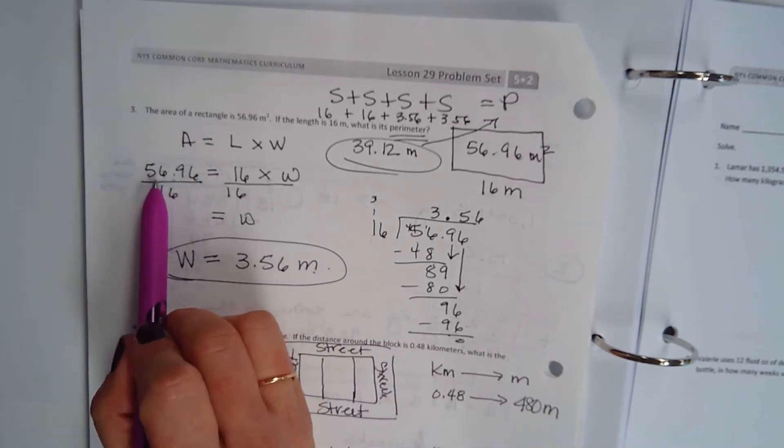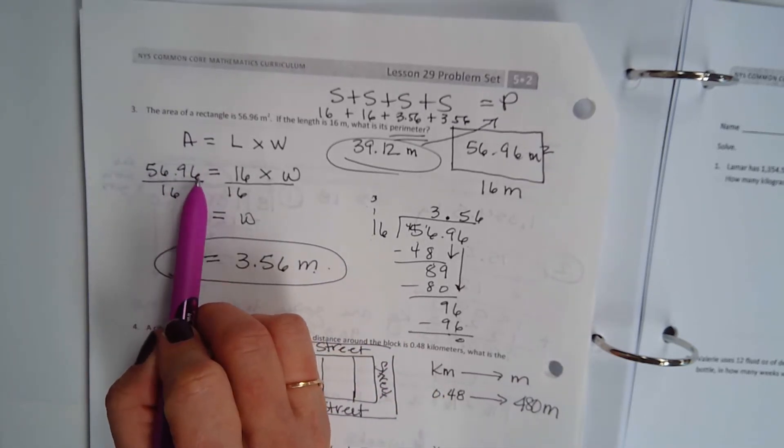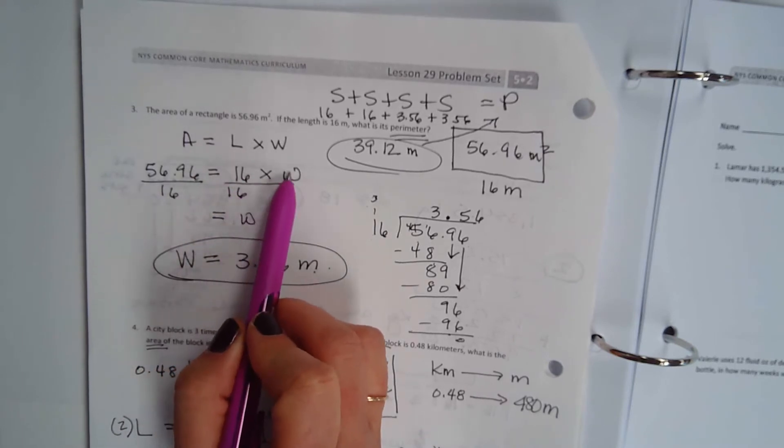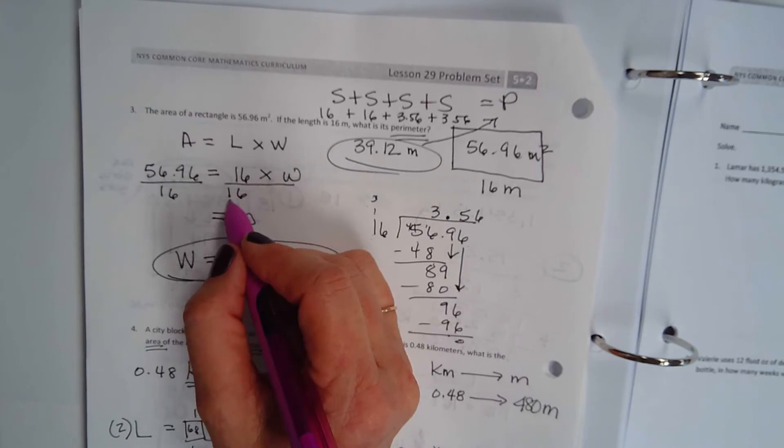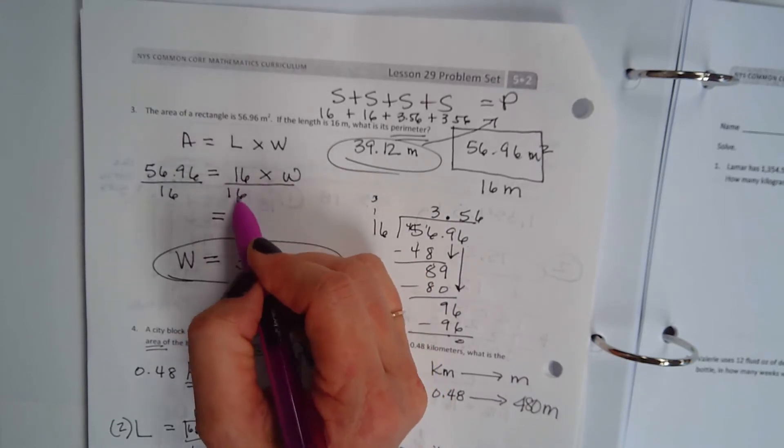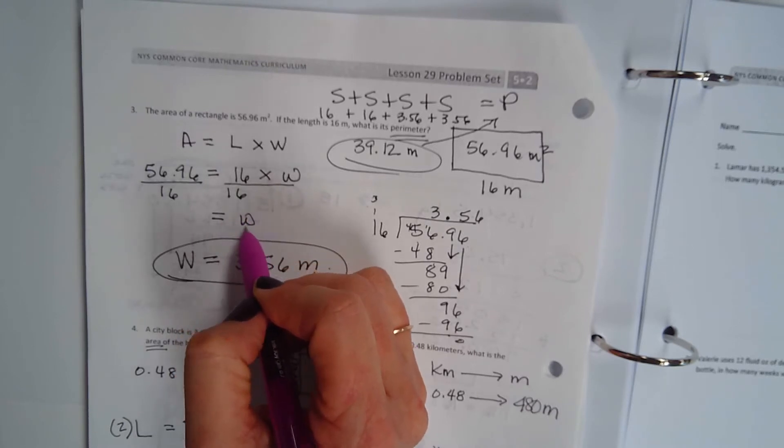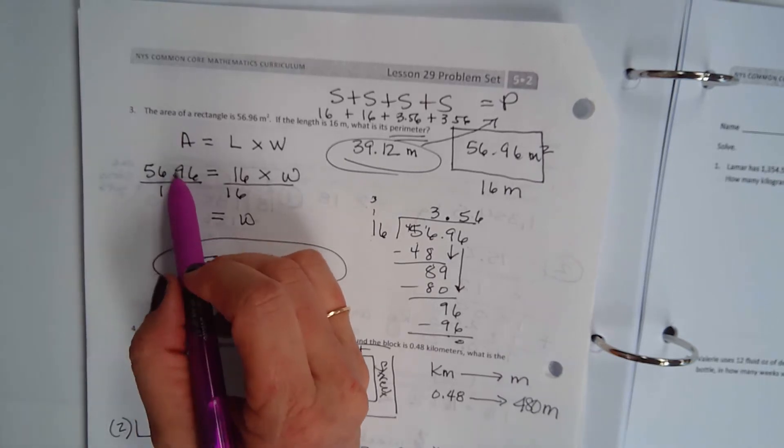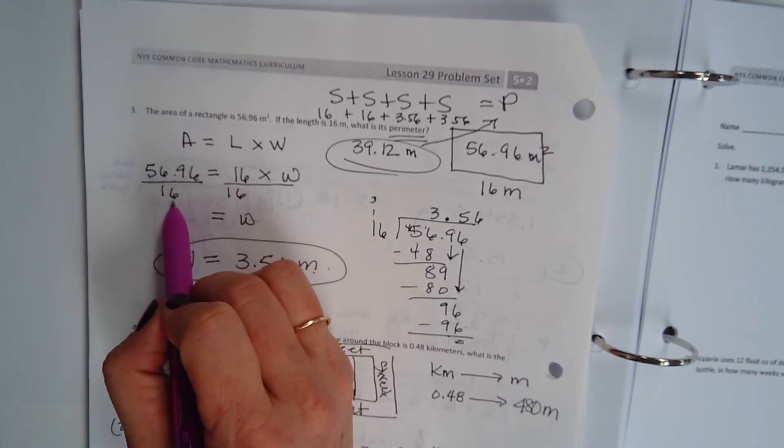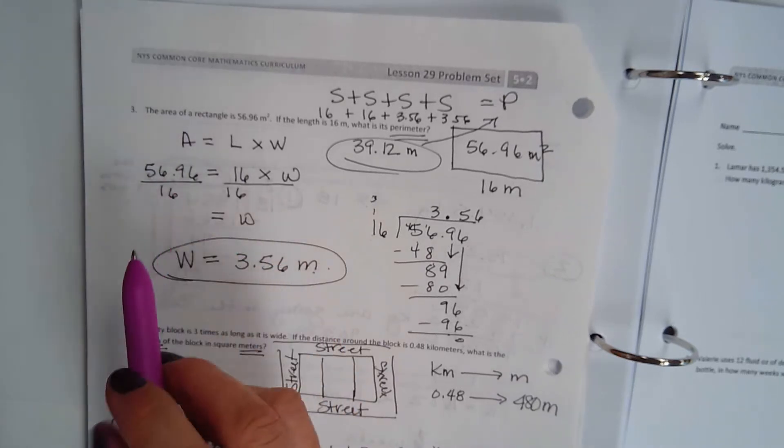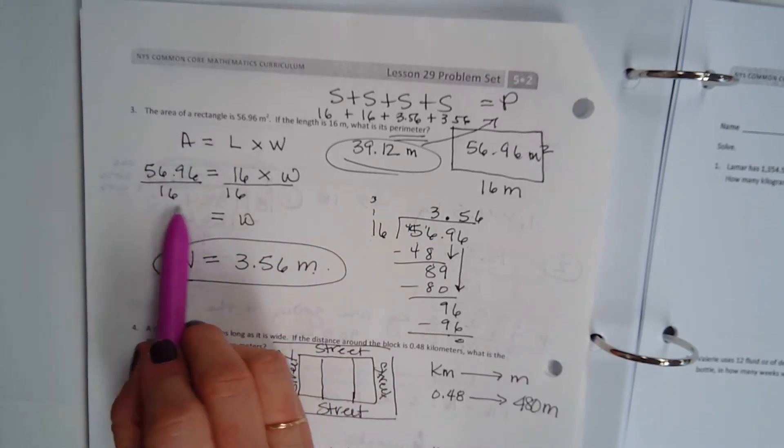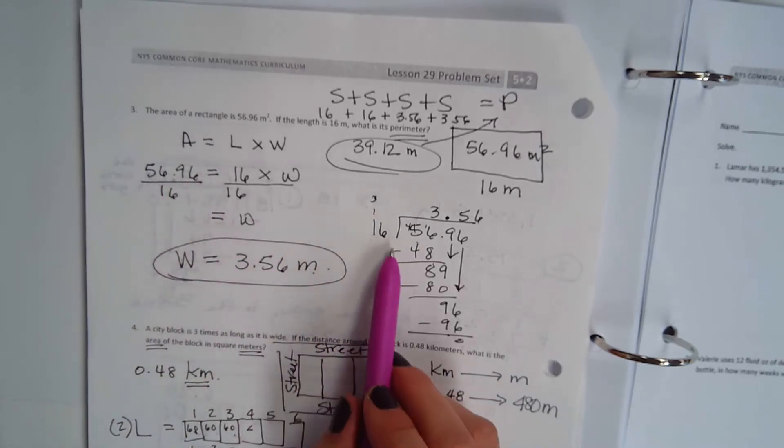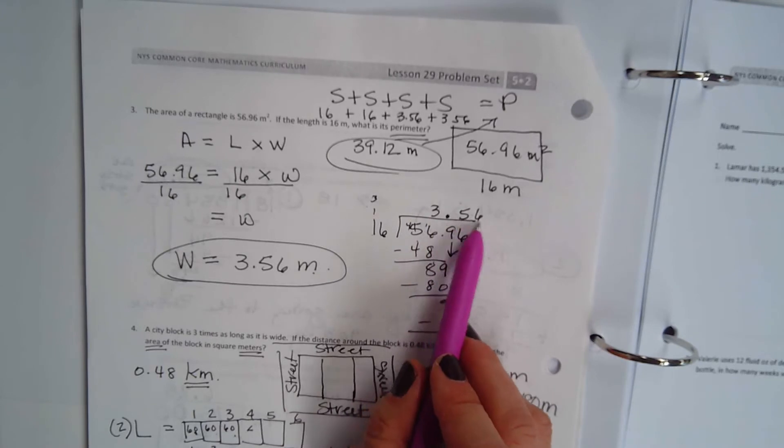So the width is equal to 3.56 meters. Another way to do it is to say area, which is 56.96, is equal to 16 times the width. And in order to get rid of that 16 and isolate the width, you would divide both sides and get rid of the 16 because 16 over 16 is equal to 1. So when you divide 16 into 56.96, you end up 3.56 meters.